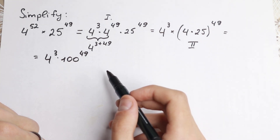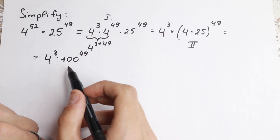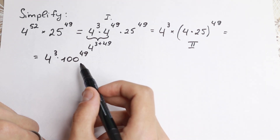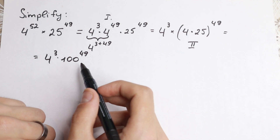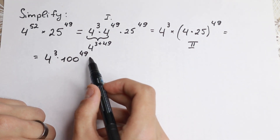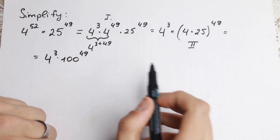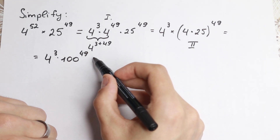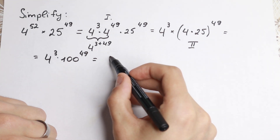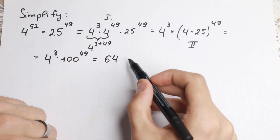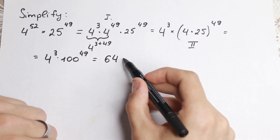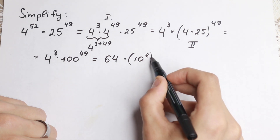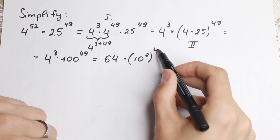I want to simplify this a little bit into the common form of some number times 10 to some power. We have 100, so we can rewrite this: 4 cubed equals 64, and 100 equals 10 squared, raised to the power of 49.